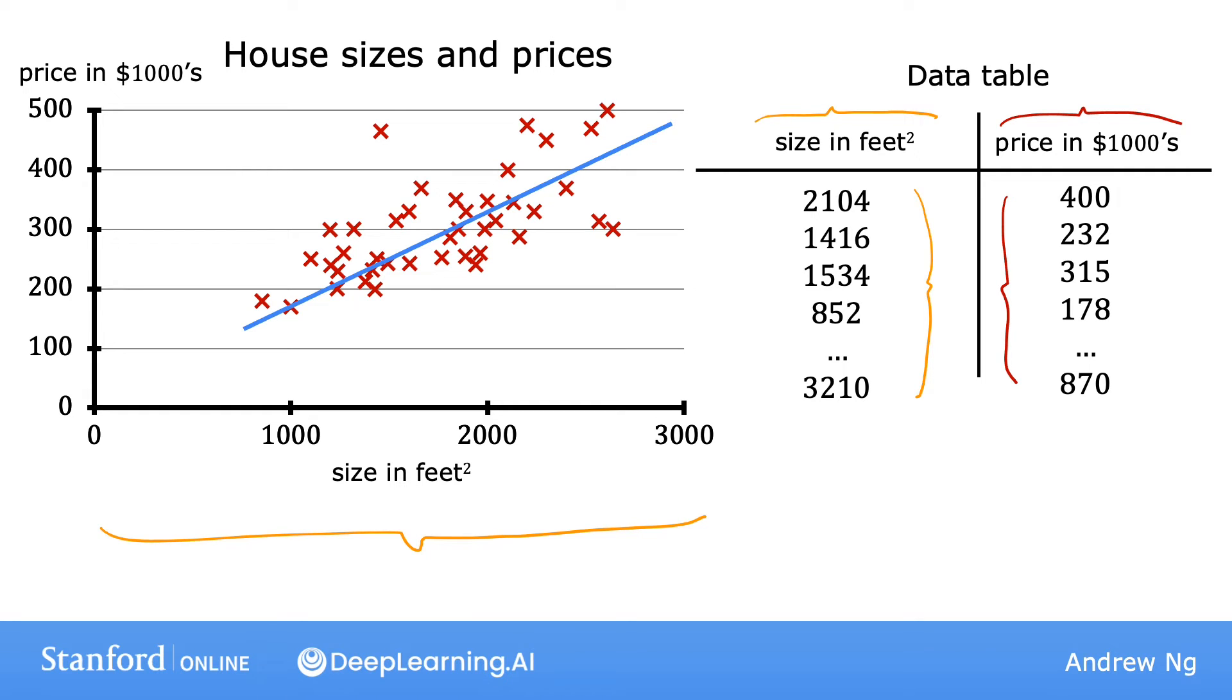Notice that the horizontal and vertical axes correspond to these two columns, the size and the price. And so if you have, say, 47 rows in this data table, then there are 47 of these little crosses on the plot on the left. Each cross corresponding to one row of the table.